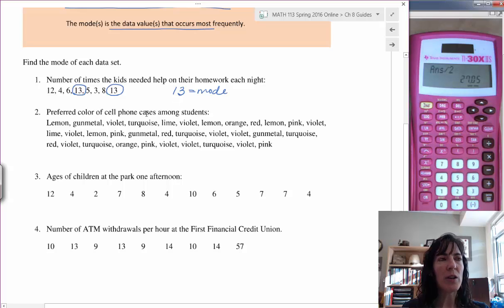Here's the preferred color. This is what modes are really good for - qualitative data where you don't have a number. So, the preferred color of cell phone cases among students.